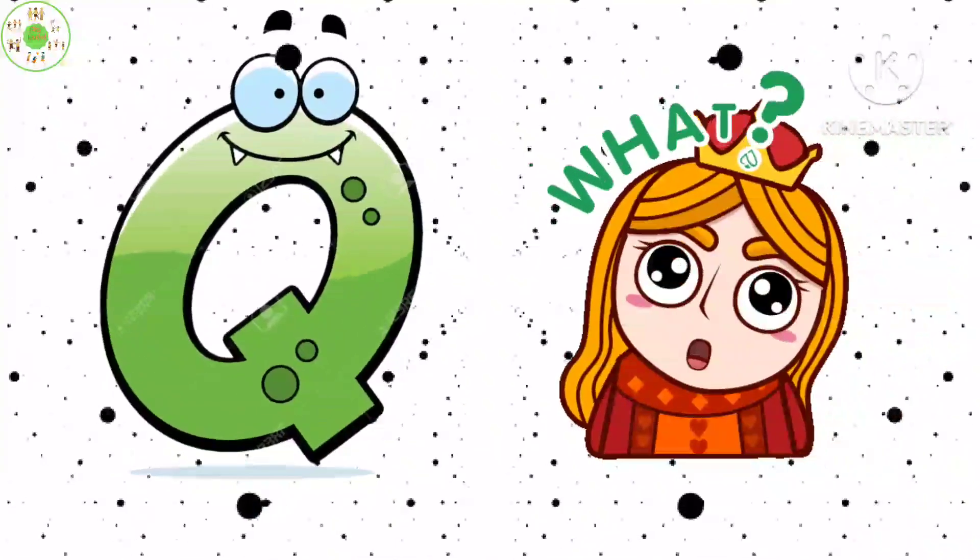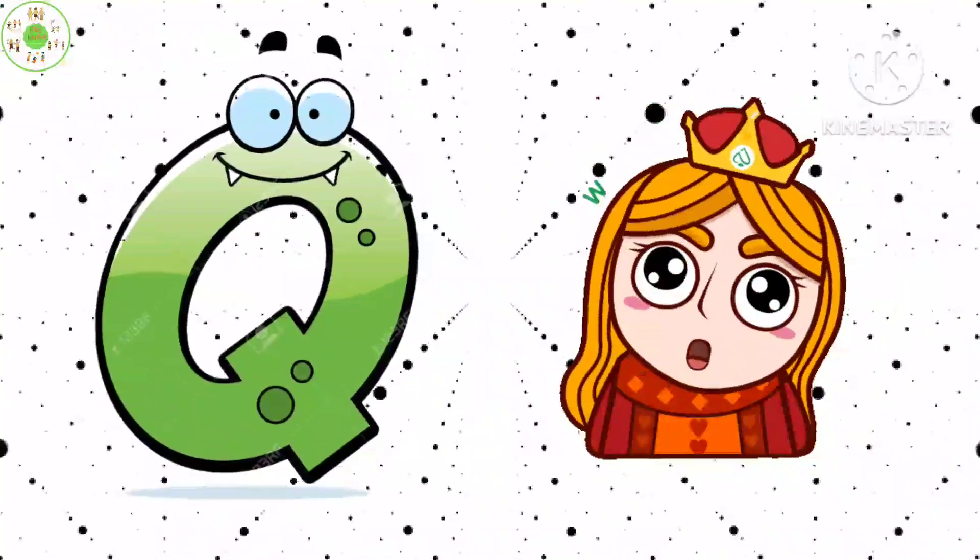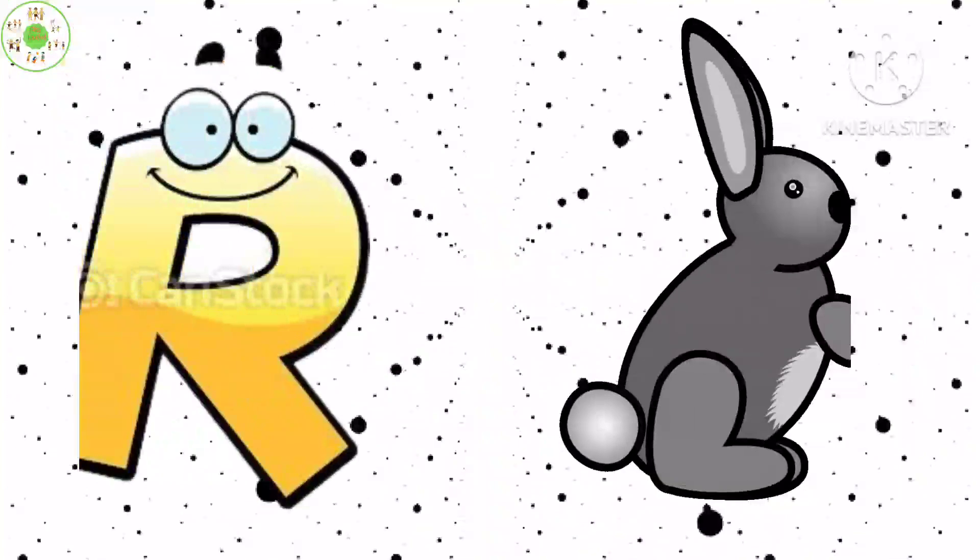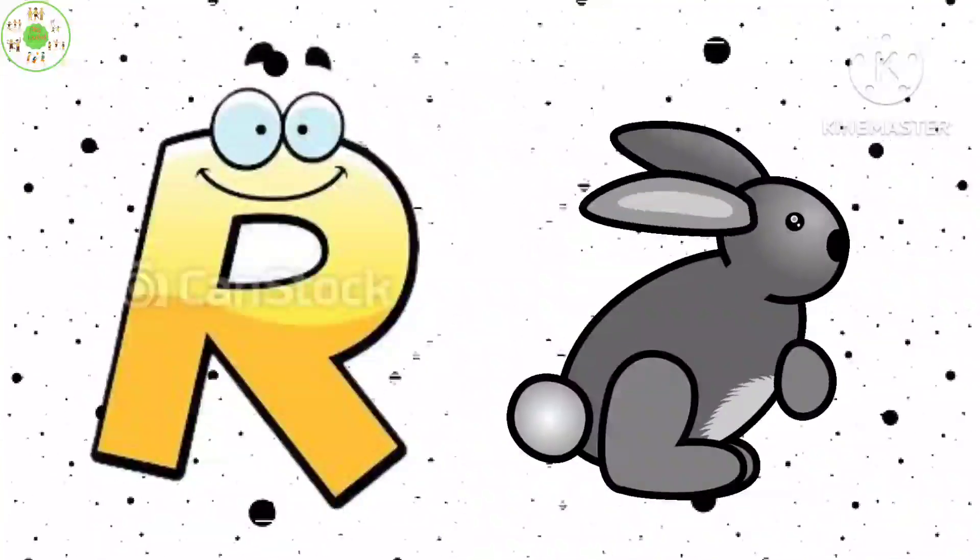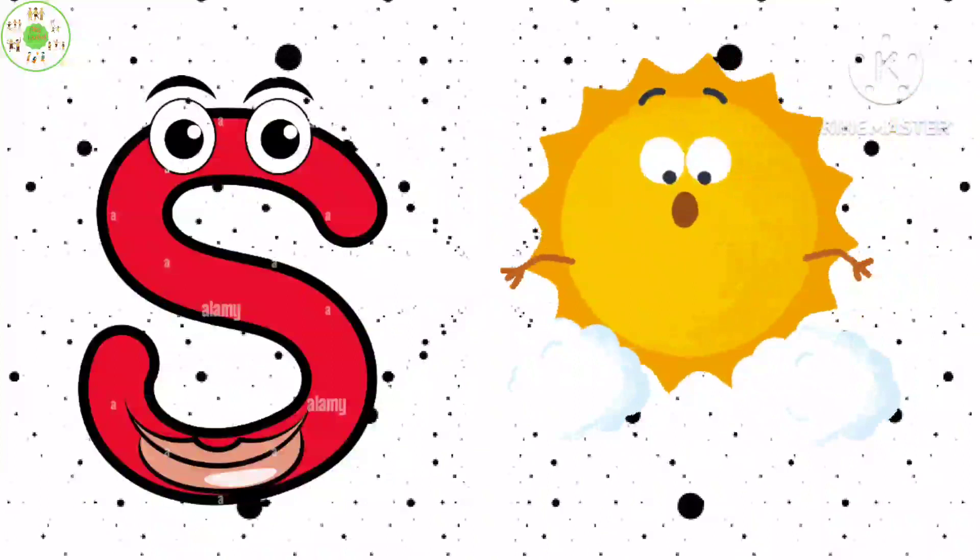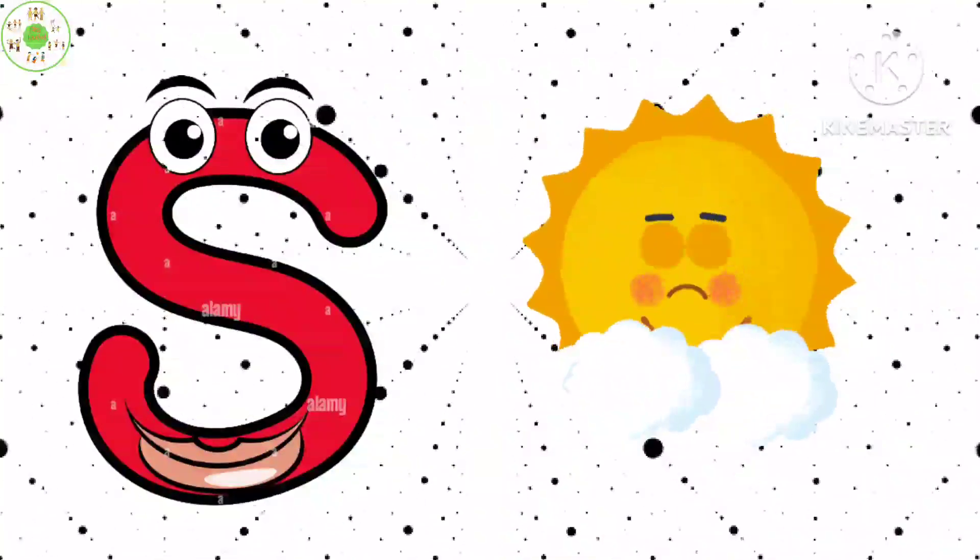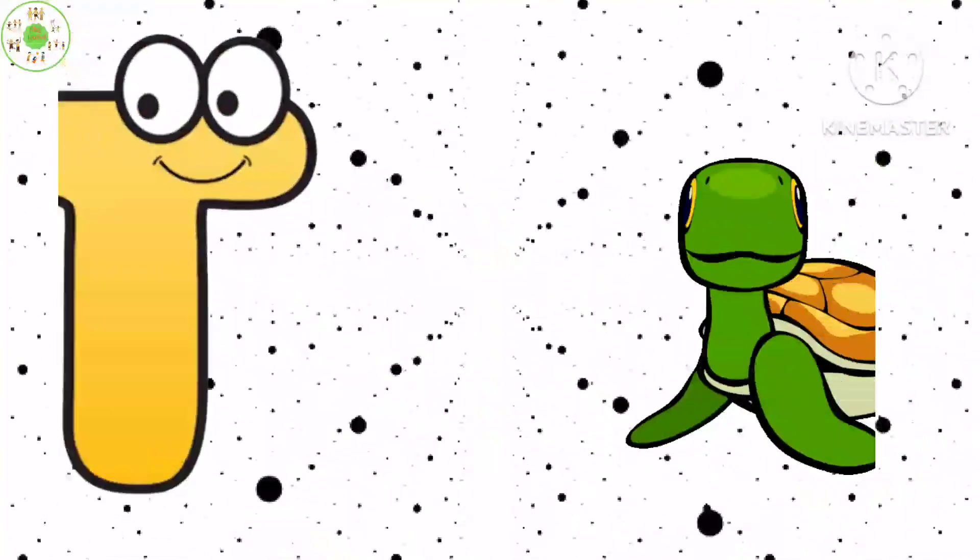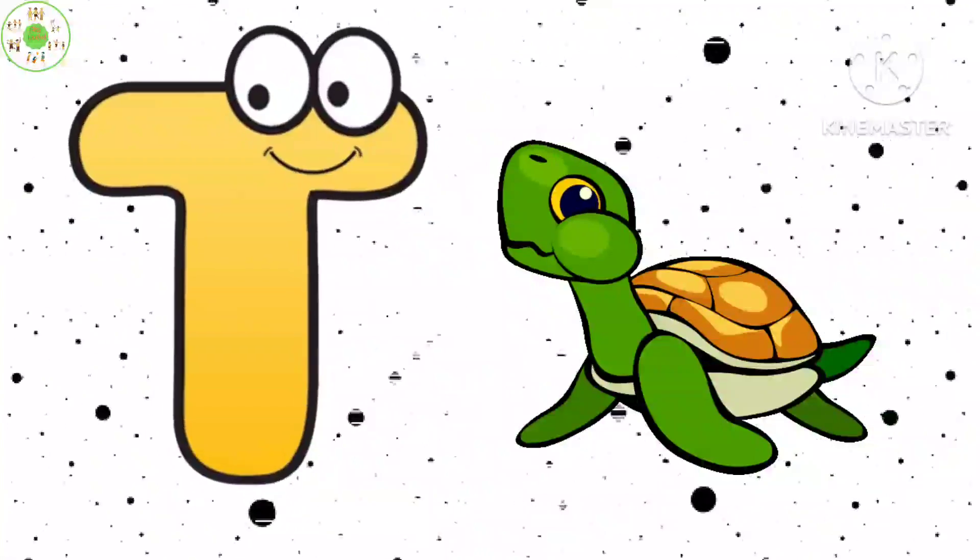Q is for Queen, Q-Q-Queen. R is for Rabbit, R-R-Rabbit. S is for Sun, S-S-Sun. T is for Toad, T-T-Toad.